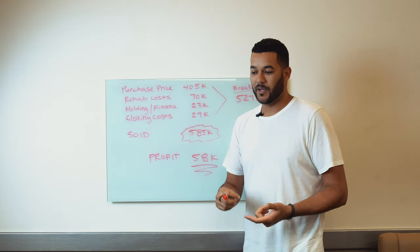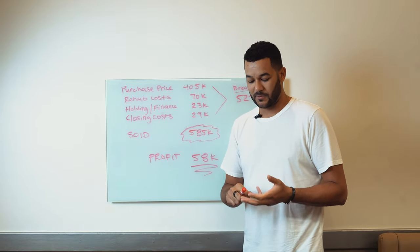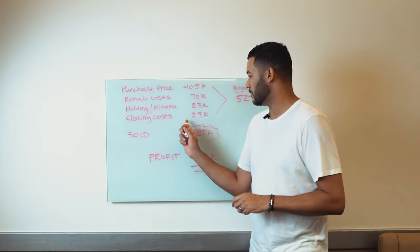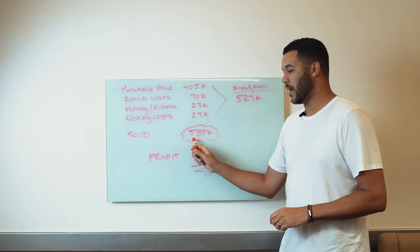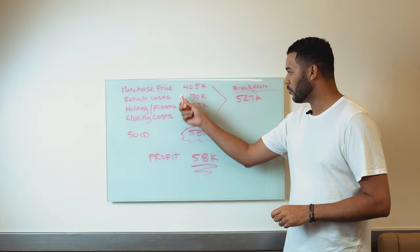The closing costs - this is what the agents, the escrow, the title all goes to - was almost $30,000. We ended up selling this property for $585,000 with all these totaled up.